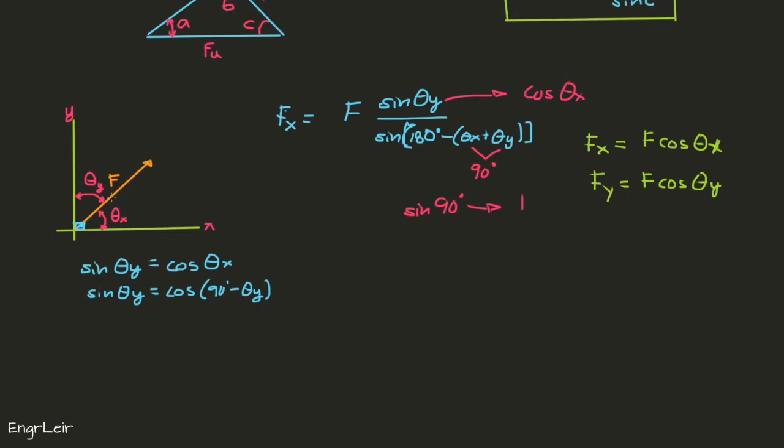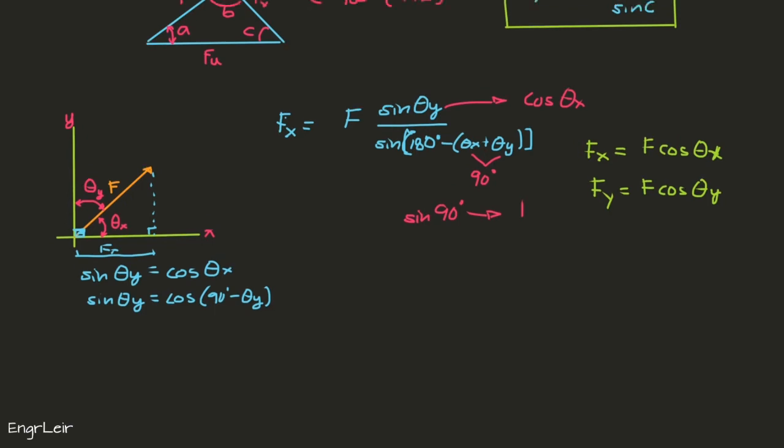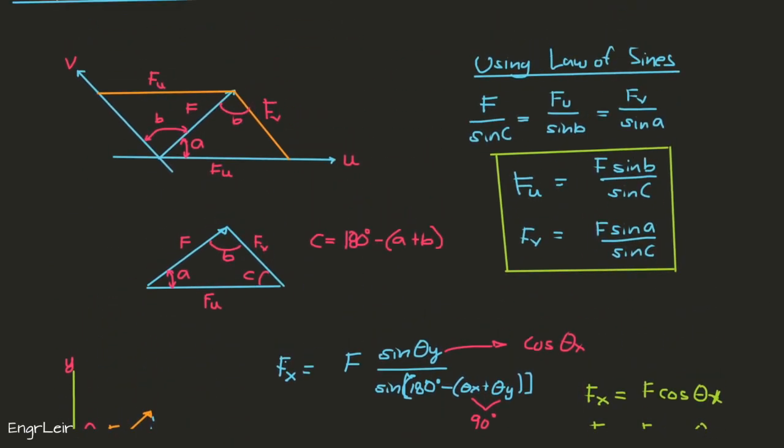Of course, basic trigonometry will tell you that this is true. If you make a triangle here - and this is a right triangle - to get F_x you simply multiply F by the cosine of this angle. This is just a different way of showing it, starting from what we learned about the components of forces.